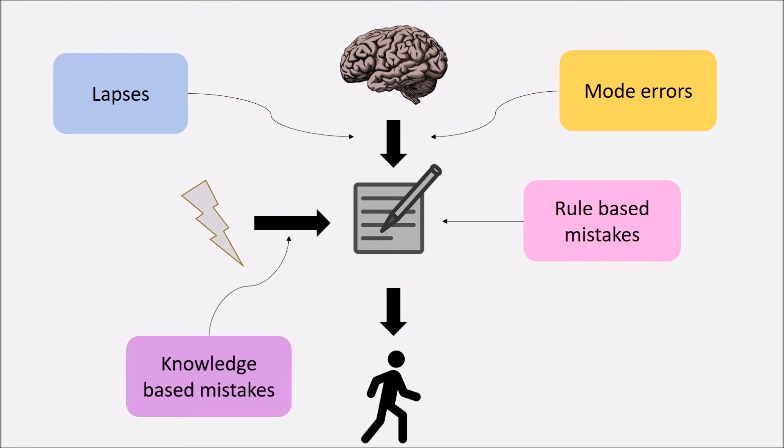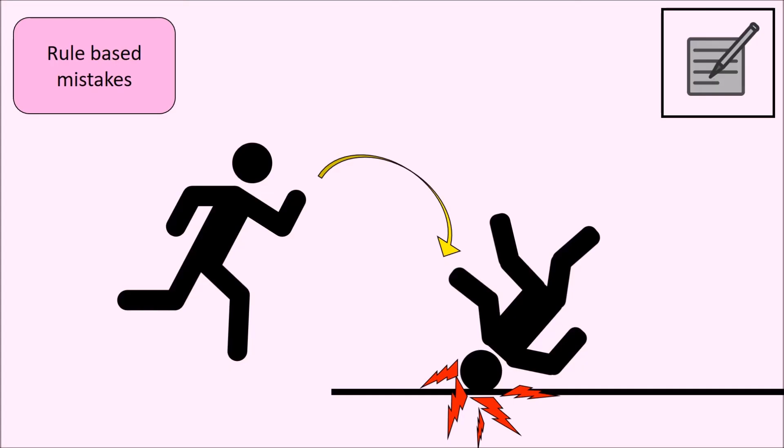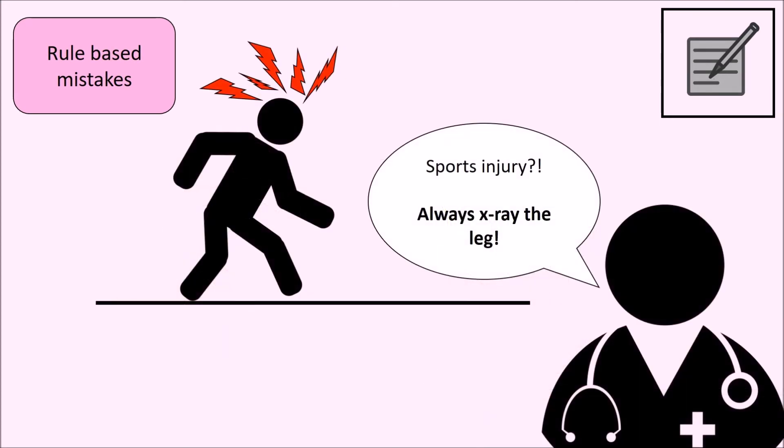Rule-based mistakes, on the other hand, happen while planning an action. Operators believe that they identified a well-working rule in the past and apply it without realizing that there may exist exceptions to that rule. Plus, those rules are usually only based on personal experience without deeply understanding the system.